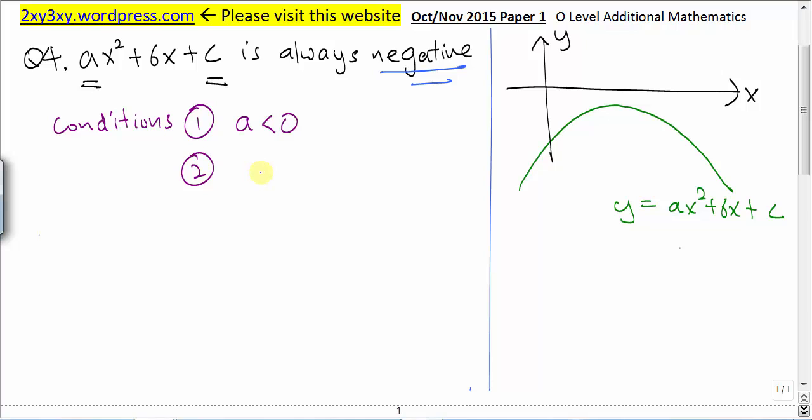For the second condition, the value of c must be negative. Now what is c? c is the point where the graph cuts the y-axis. And since all the y values here are negative, c being the y-intercept must be negative as well. So c must be less than zero.